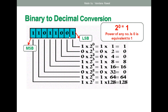Then 0 × 2¹ = 0, since we're multiplying by 0. Then 0 × 2² = 0. Then 1 × 2³ = 1 × 8 = 8, because 2³ equals 8. Then 1 × 2⁴ = 16, because 2⁴ equals 16.